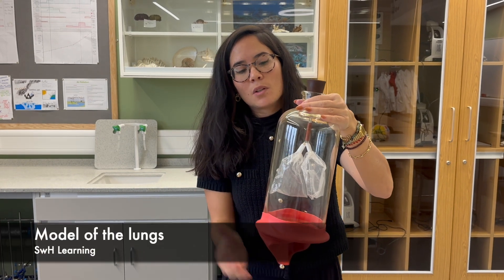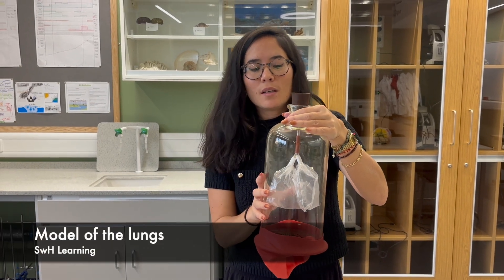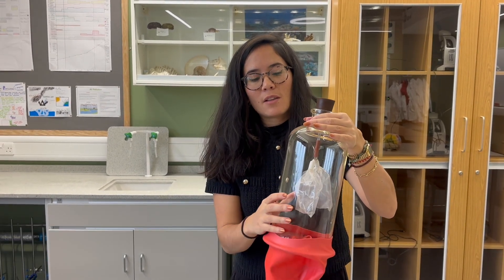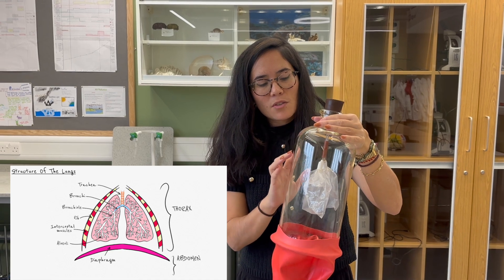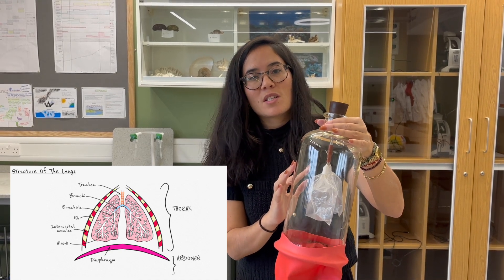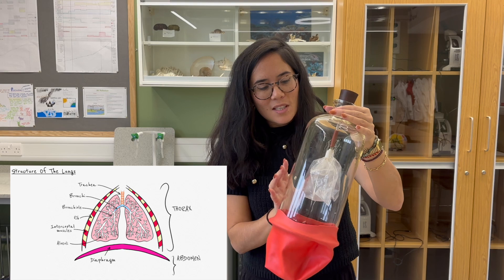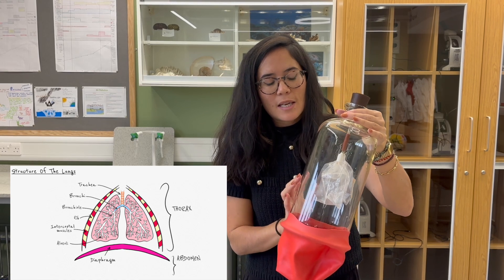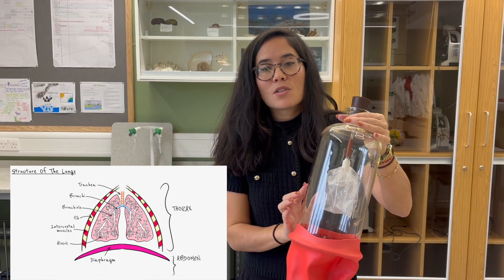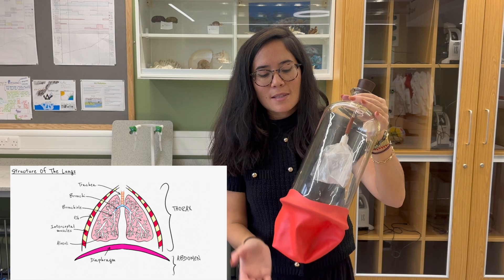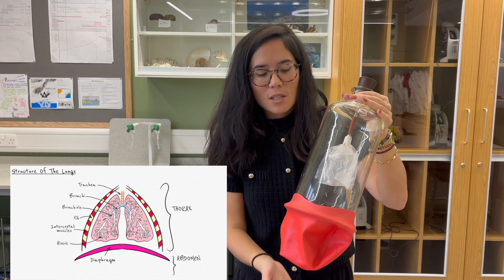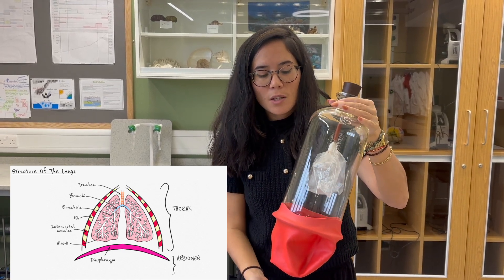Here's a fantastic model of the lungs. We're using a bell jar to represent the ribcage. We've got a glass tube which is your trachea, which branches to form your bronchi. We can't really see any bronchioles here. The lungs themselves are represented by these two plastic bags, and the diaphragm is that muscular sheet represented by this balloon.